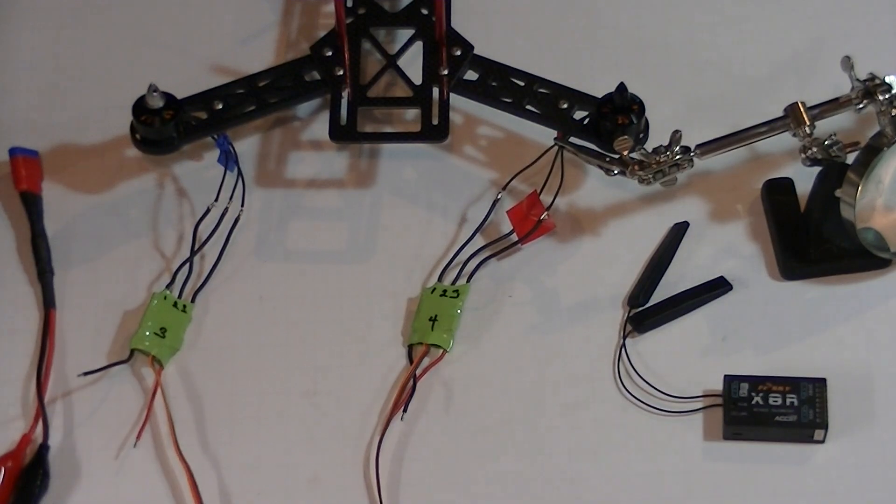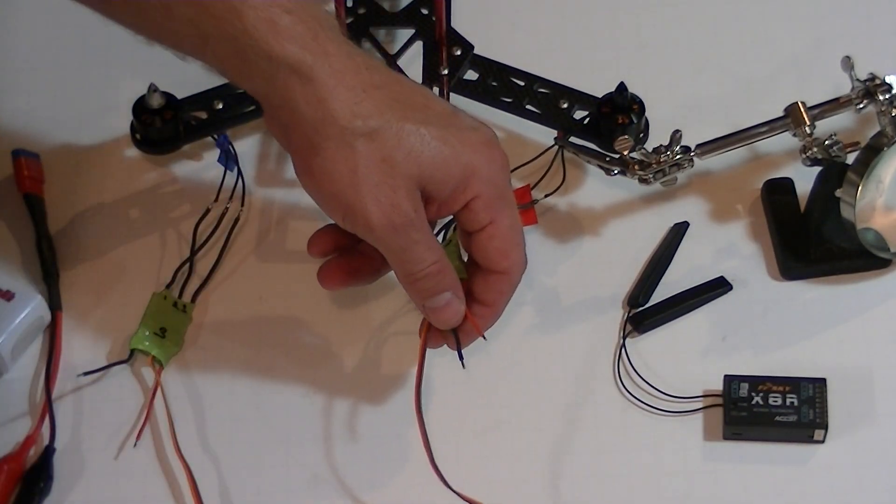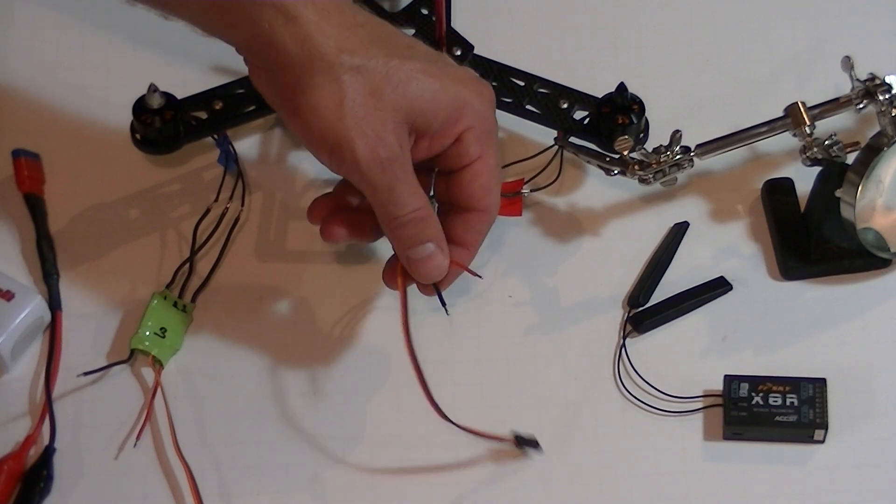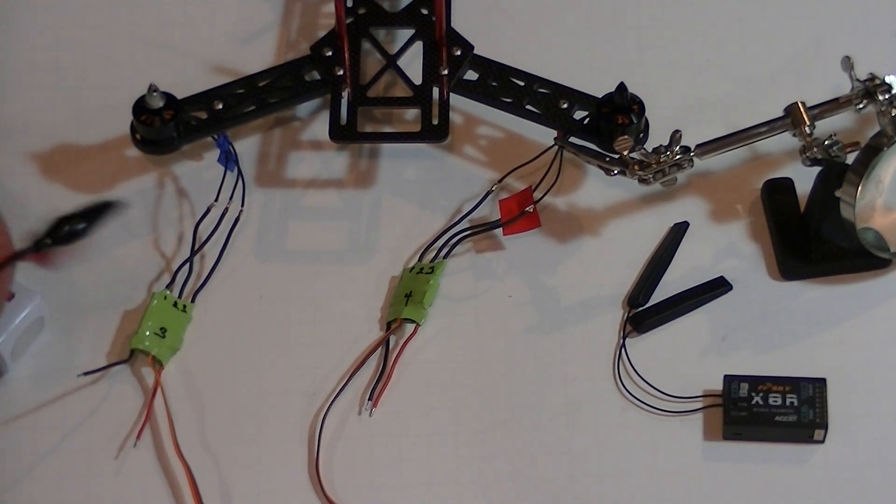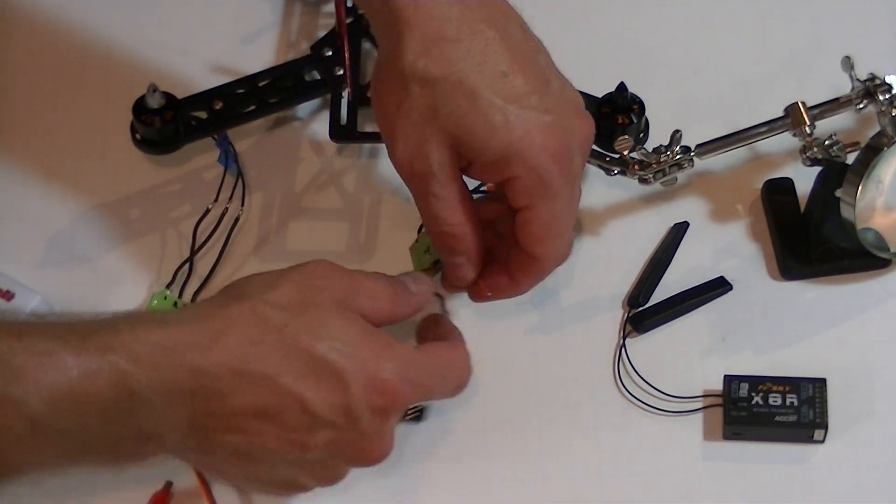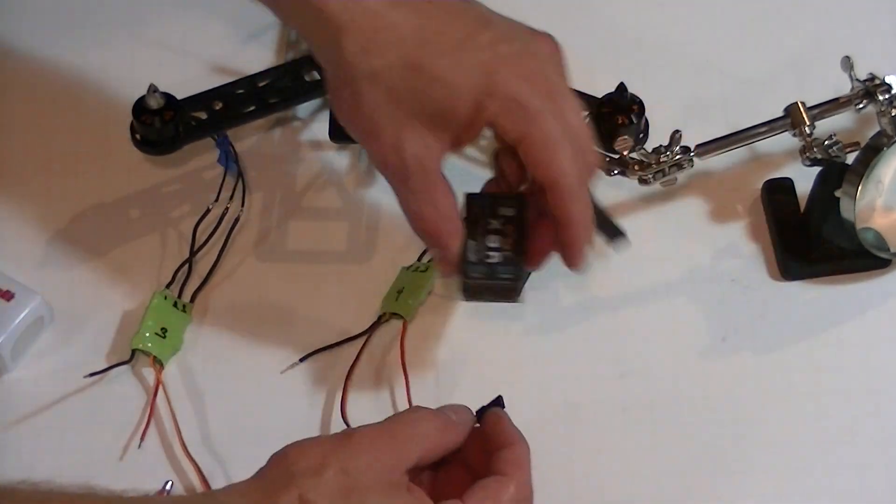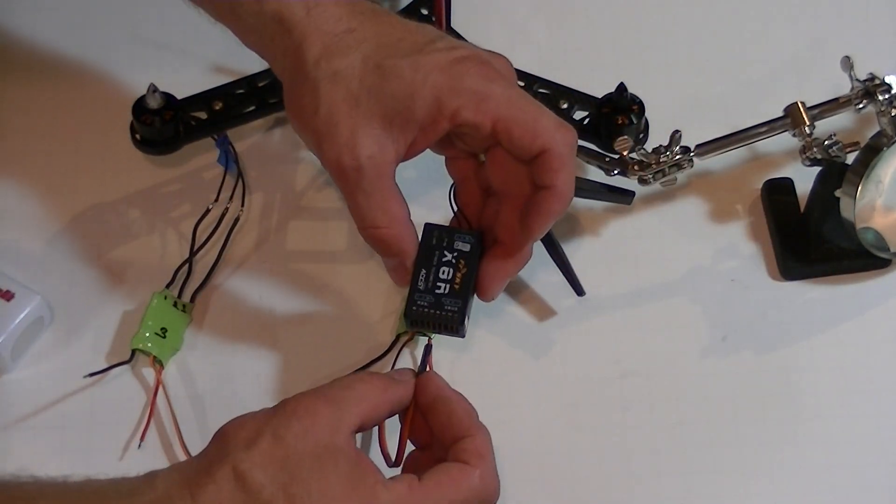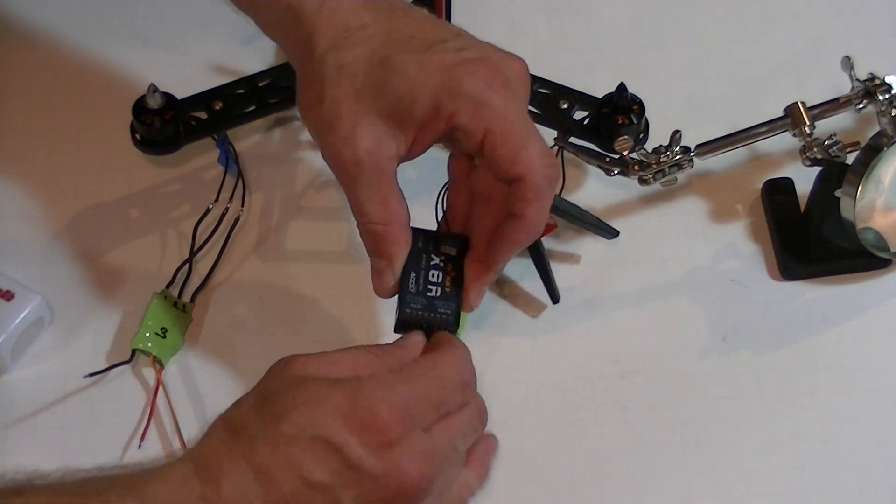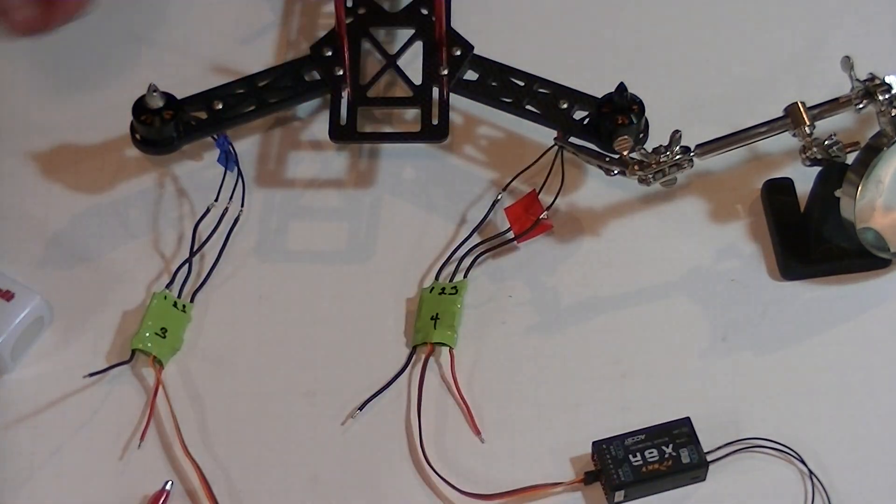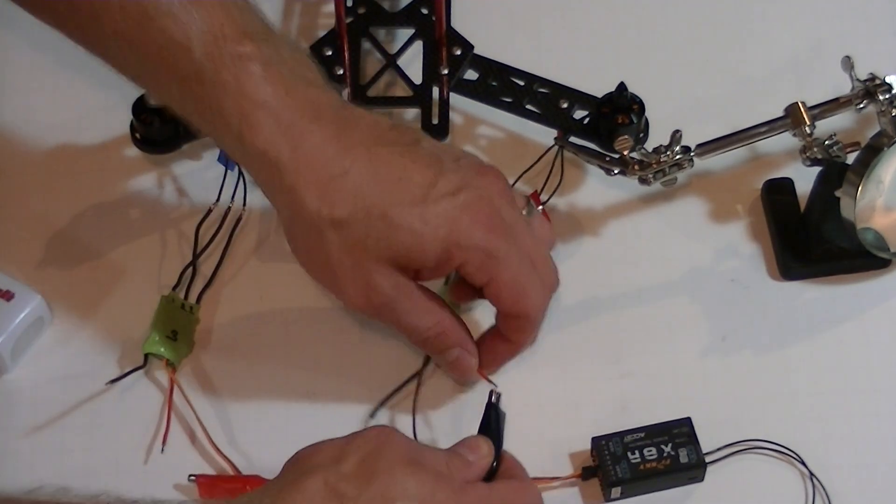So now we need to hook up our battery. Now I'm not soldering anything on this because I'm breaking down and getting a power distribution board. So what I'm going to do is put these apart like this, take my lead, stick it into my receiver, make sure I stick it in right. We're just testing to make sure that we have the correct direction. We'll set the end points later on.